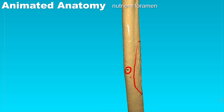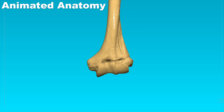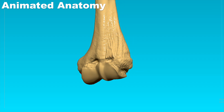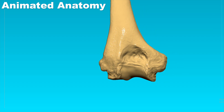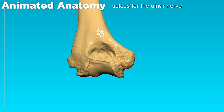As a rule we should also find a nutrient foramen here. Looking at the bone in its lower portion, we can see the medial epicondyle and the lateral epicondyle — the medial one is larger and the lateral one is smaller. We can also find here the sulcus for the ulnar nerve.